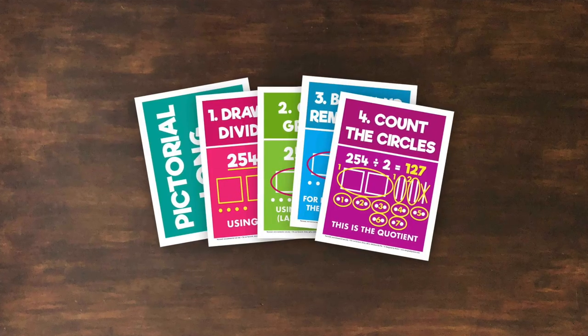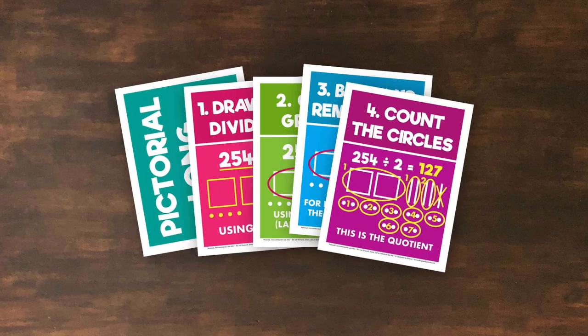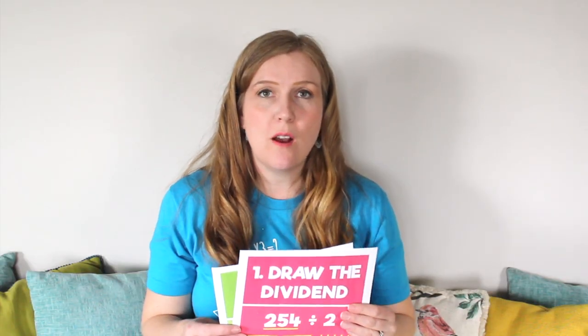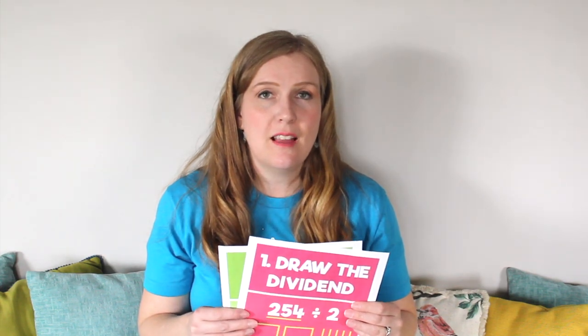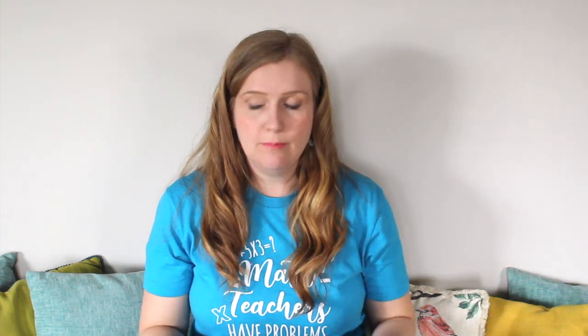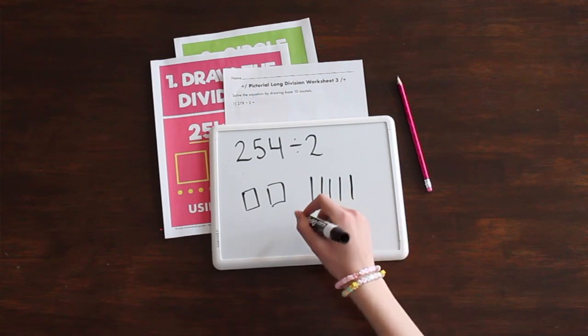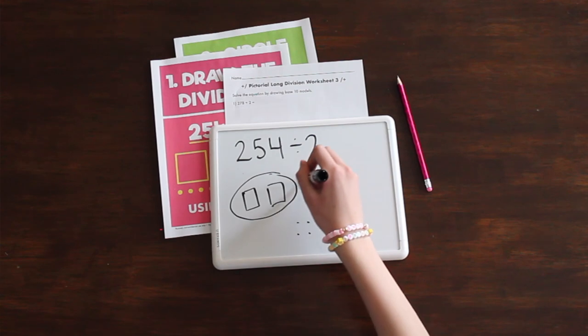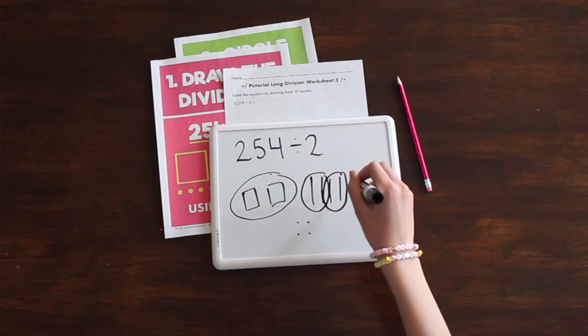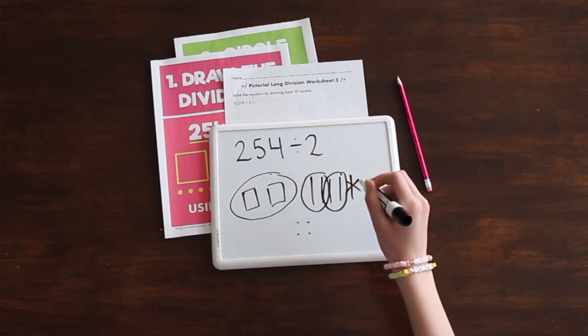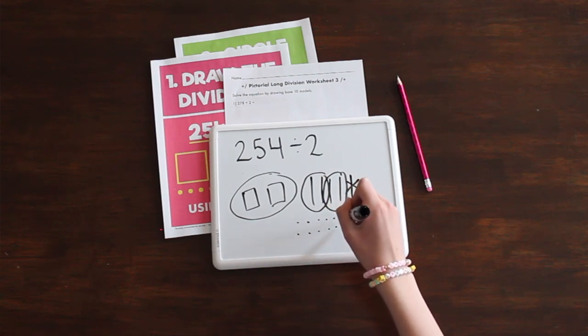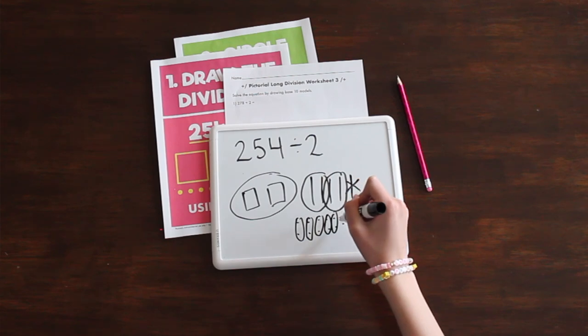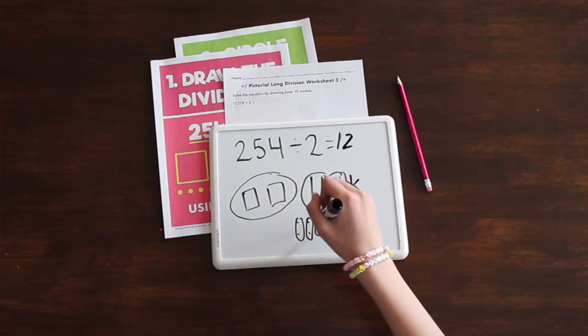But to make pictorial long division really simple, I created these classroom signs. But you can make your own signs and you can just walk students through the steps as a class so that they know how to do it. Step one, draw the dividend using base 10 model. Number two, circle groups of the divisor starting with the largest place value. Then you are going to break up the remainders for each place value into 10 of the next smallest place value. Cross them off as you go. Count the number of circles in each place value. This is the quotient.